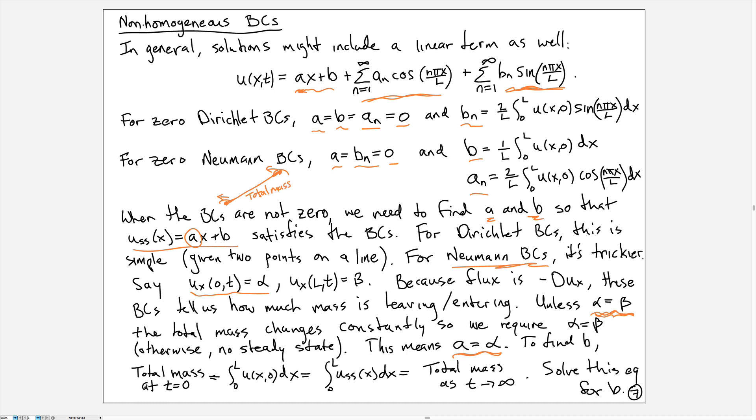If we were to calculate the total mass at t = 0, we would do that by integrating from 0 to L of the initial concentration. That has to be equal to the total mass as t goes to infinity. The mass as t goes to infinity will be the steady state. So if we replace u_ss by ax + b, we know that a has to be the given boundary condition alpha, and so we have alpha*x + b where b is unknown. But then the initial condition is known, so we can find this integral and the parameter b can now be solved by solving this equation for b.